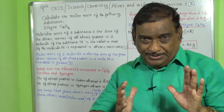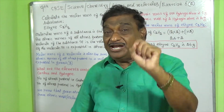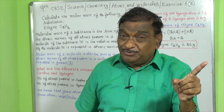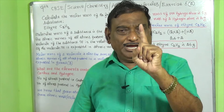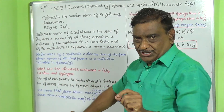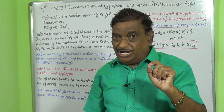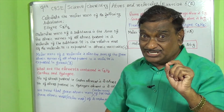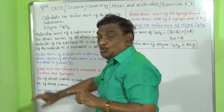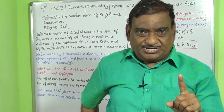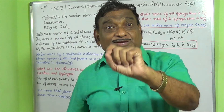First of all, we should ascertain what elements are contained in the given chemical substance. What is the difference between the element and the compound? If a chemical substance contains only one element, it is called an element. But in this case, the chemical substance contains more than one element, so it is called a compound. If a chemical substance contains two or more elements, that chemical substance is called a compound.